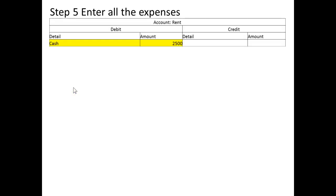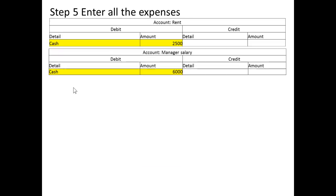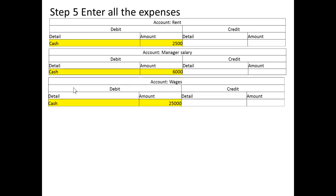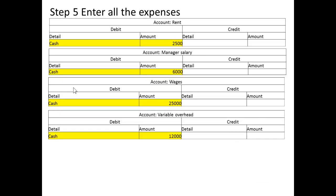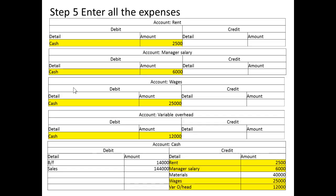Now let's look at the expenses incurred. We debit rent and credit cash; debit the manager's salary and credit cash; debit wages and credit cash; debit variable overhead and credit cash. Those are all our expenses, and you can see they are all laid out with the credits highlighted in the cash account.